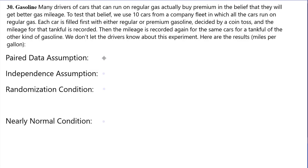Paired data assumption. Many drivers of cars that run on regular gasoline actually buy premium, believing they will get better gas mileage — higher octane should give better gas mileage and higher horsepower, so you use less gas. To test this belief, we use 10 cars from a company fleet, all on regular gas. Each car is filled first with either regular or premium decided by a coin toss, so there's some randomization. The mileage for that tank is recorded, then the same car gets a tank of the other kind of gasoline. We don't let the drivers know about the experiment — so it's single blind.